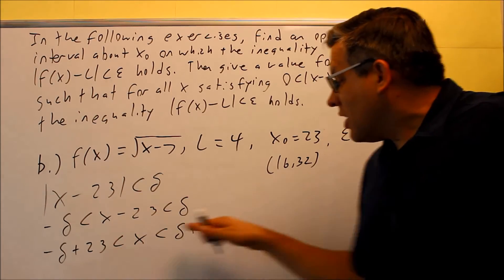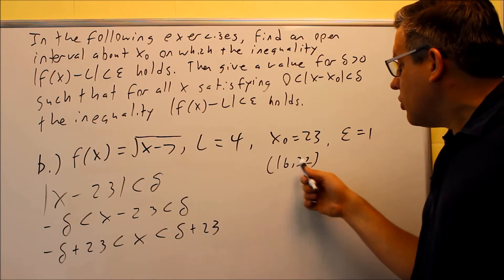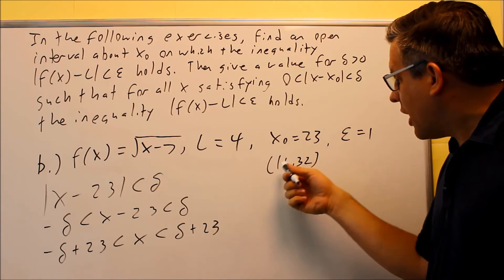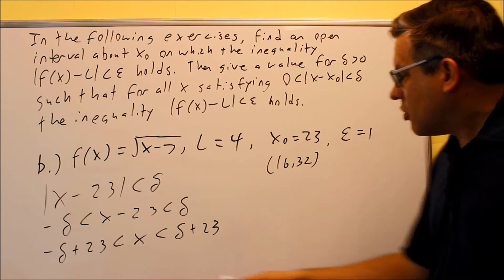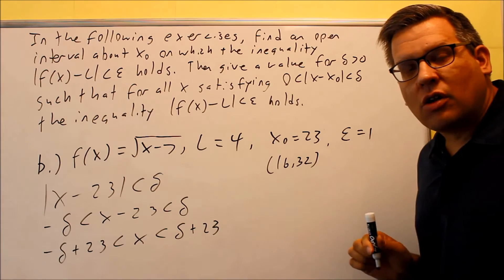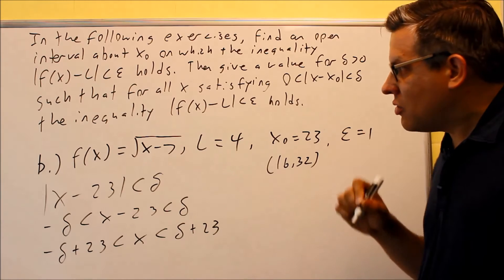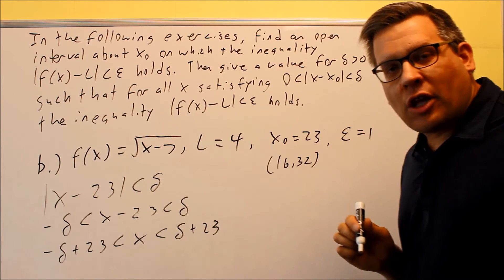Now that we have each of these, what you're going to do is you're going to set each of these equal to what we got previously when we found that open interval. We found that 16 to 32. So the smaller one goes with 16, the larger one is going to be set equal to 32. Now when you do this, you're going to get two different values for your delta.